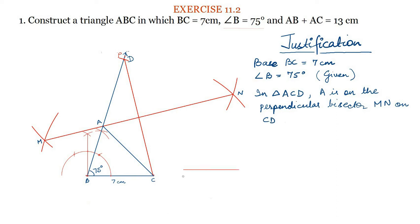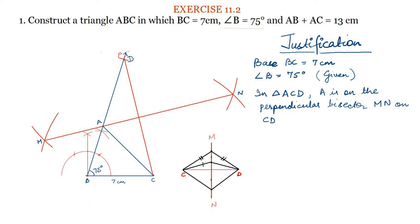Let this be a line segment CD and let this be a perpendicular bisector of line segment CD, let it be MN. We know that any point on this perpendicular bisector will be at equal distance from C and D, that is the two endpoints of the line segment. Similarly, A is a point on the perpendicular bisector MN of CD, so A will be at equal distance from C and D. Therefore, we can write AD is equal to AC.